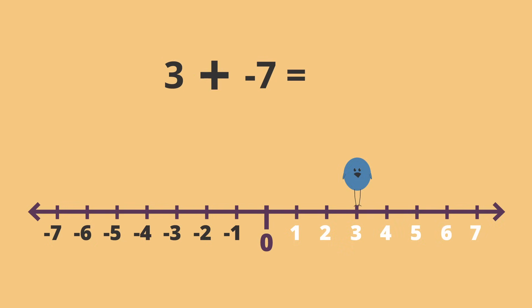The operation, plus or minus, tells you which end of the number line to look at. Since we're adding, our little bird will look right, towards the positive end.